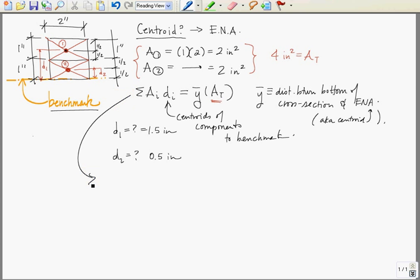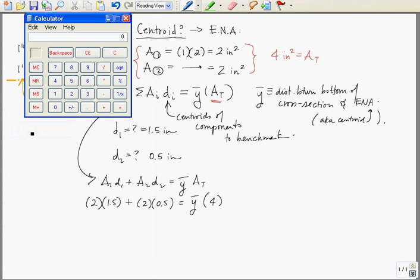So let's plug into our equation. A1, d1 plus a2, d2 equals y bar area total. 2 inches squared times 1.5 inches plus 2 inches squared times 0.5 inches equals y bar times total area, which we've computed as 4 inches. Let me grab the calculator. 2 times 1.5 equals 3, plus 2 times 1 half, that's 1, that equals 4.